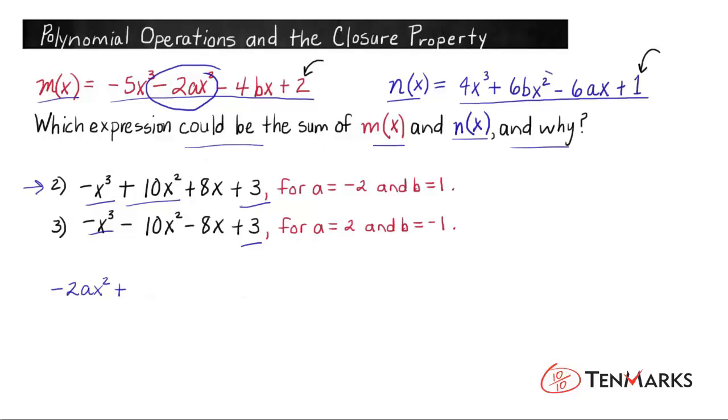And we'll add that to n(x)'s quadratic term, which is +6bx². Now let's use this a value and this b value and plug them into this expression and see what we get. That'll give us -2 times -2x² plus 6 times 1x². When we simplify this, that'll be a positive 4x² + 6x², which goes to 10x². So that's a positive 10x², so far option 2 works. We have -x³ + 10x².